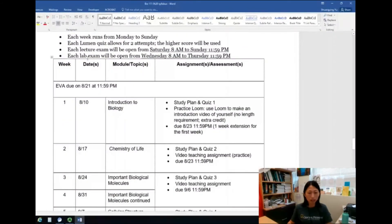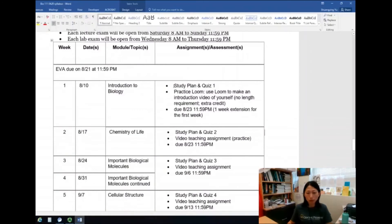Let's look at the lecture real quick. This is week, and this is the date. So the date is the date for Monday. And then for our course, each week runs from Monday to Sunday. So everything, each chapter starts on Monday and is due on Sunday. This is the assessments or assignments that you have to complete for each work. So for example, week one, you need to complete Lumen study plan and quiz one.